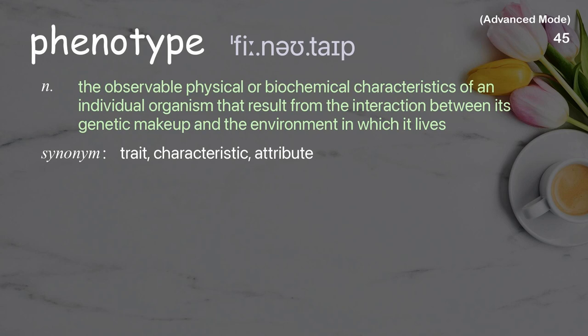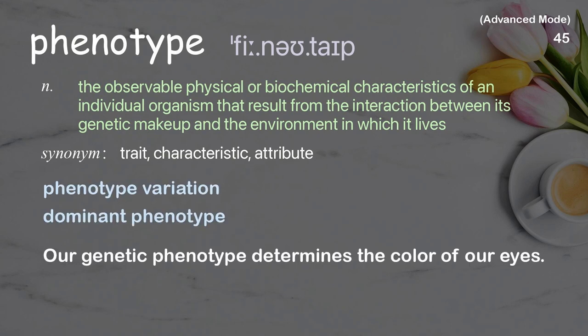Phenotype: the observable physical or biochemical characteristics of an individual organism that result from the interaction between its genetic makeup and the environment in which it lives. Examples: phenotype variation; dominant phenotype. Our genetic phenotype determines the color of our eyes.